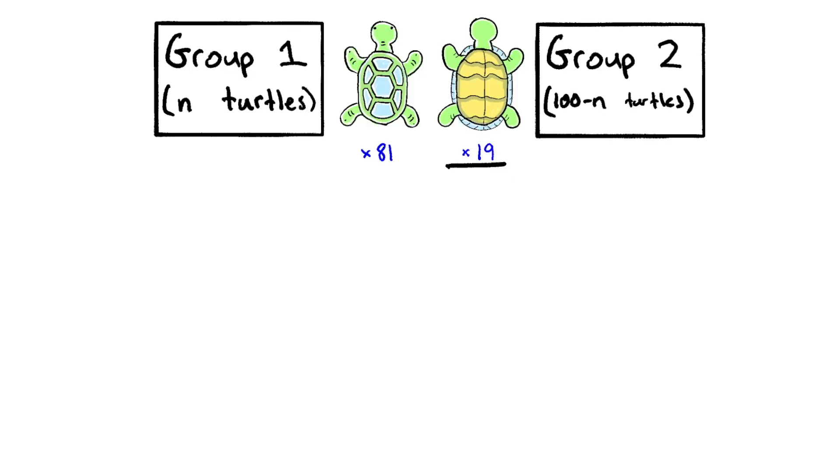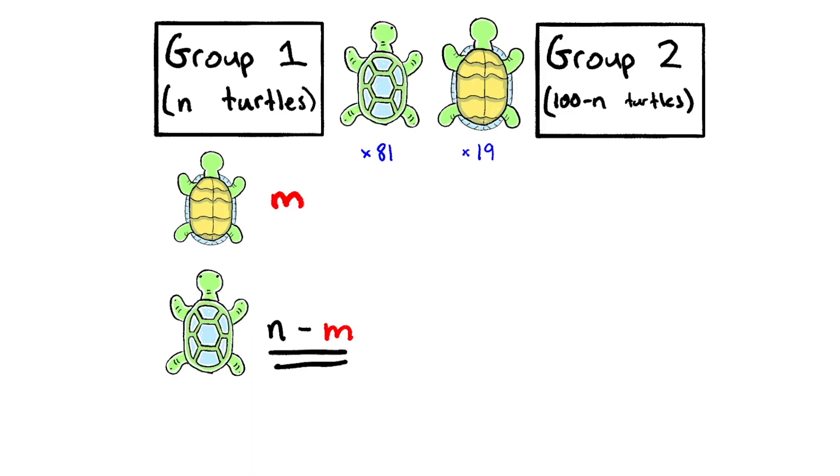Now, out of our 19 belly up turtles, let's imagine that m of them end up in group 1. By extension, since group 1 has n total turtles, that must mean the number of shell up turtles in group 1 is n minus m.